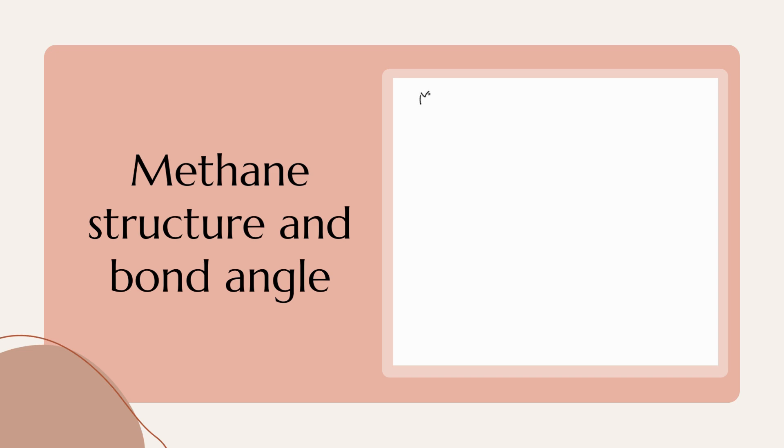What is the structure of methane and its bond angle? Methane is a carbon compound carbon attached to hydrogens, which you generally call a hydrocarbon. Carbon valency is usually four, so carbon should be bonded to four different bonds either by the same atom or by different atoms.